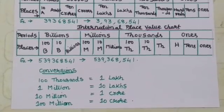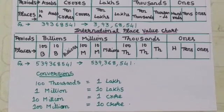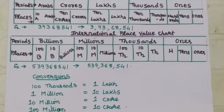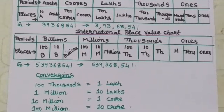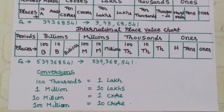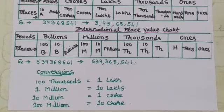The places in thousands periods are thousand, ten thousand, hundred thousand. The places in millions are one million, ten million, and hundred million. Similarly, in billions, we have billion, ten billion, and hundred billions.